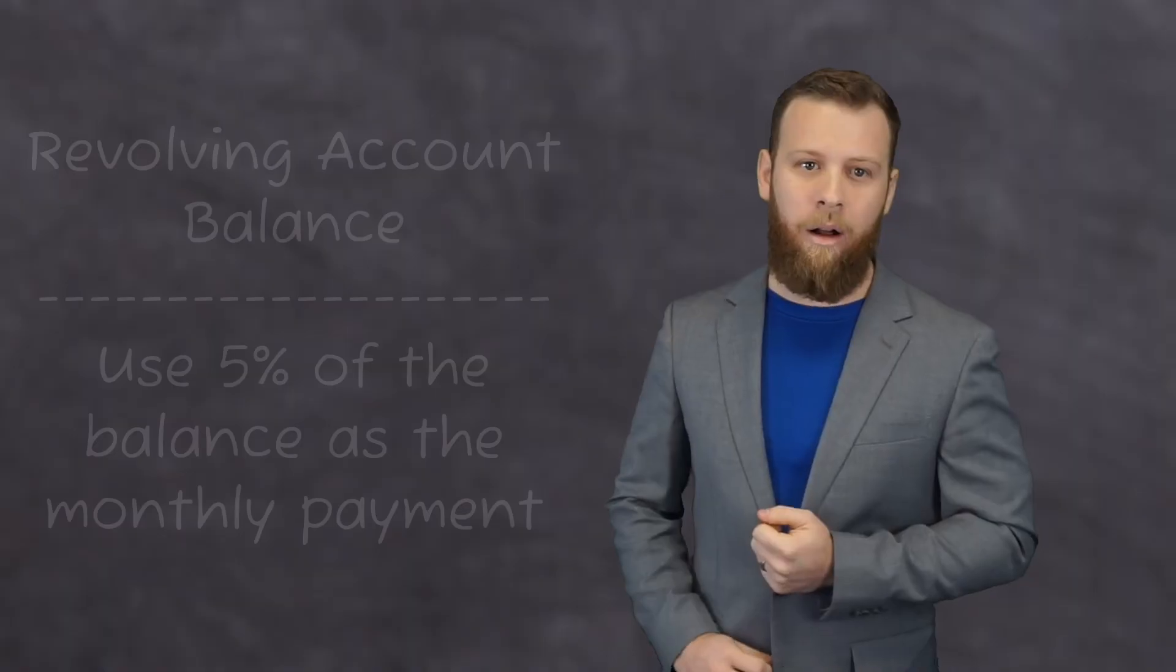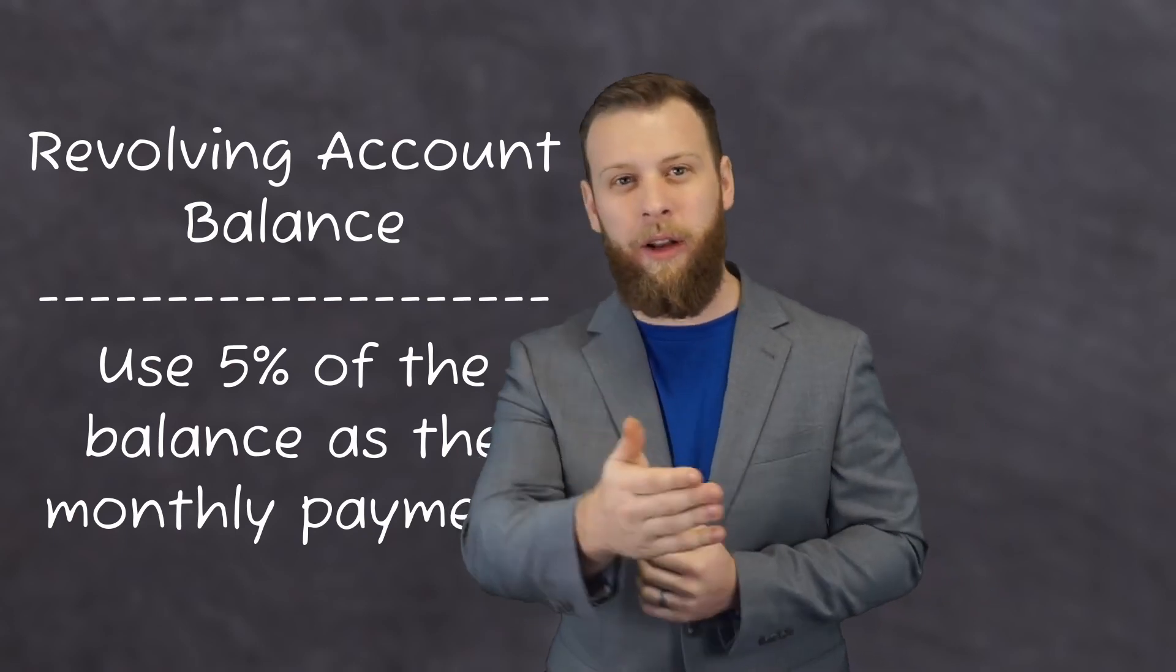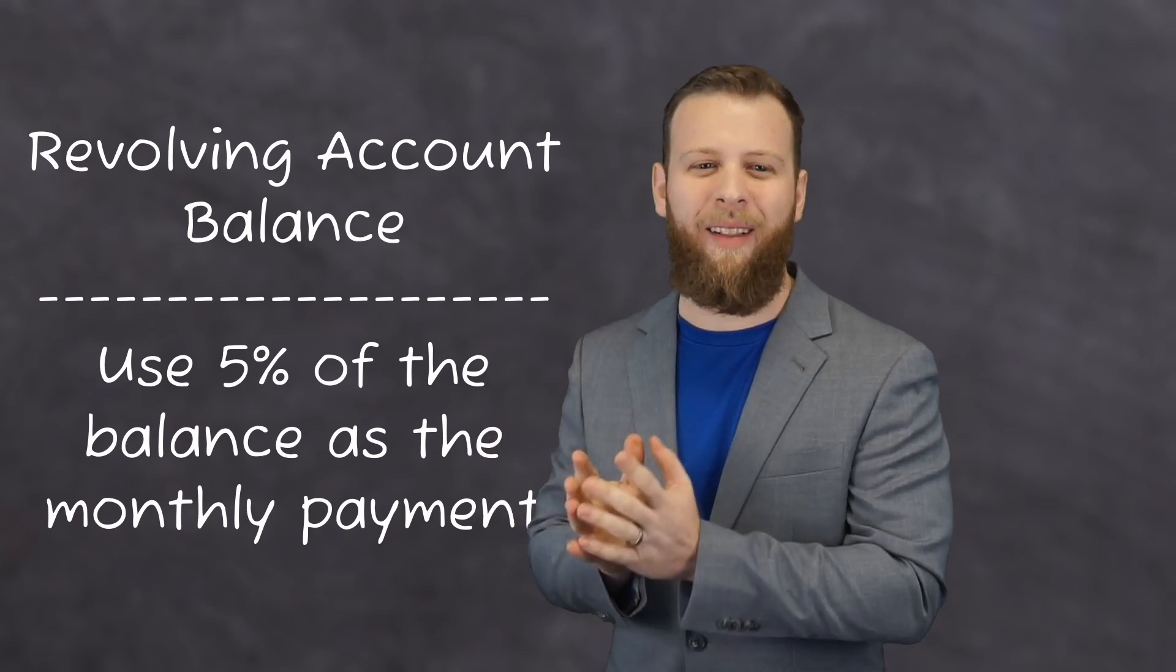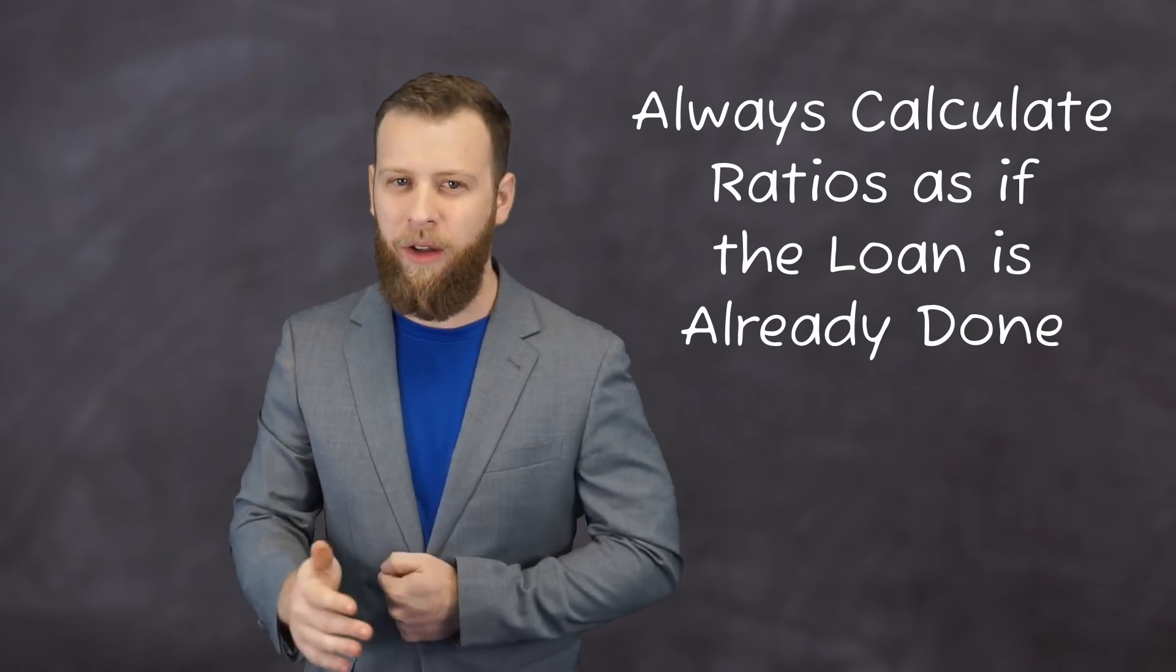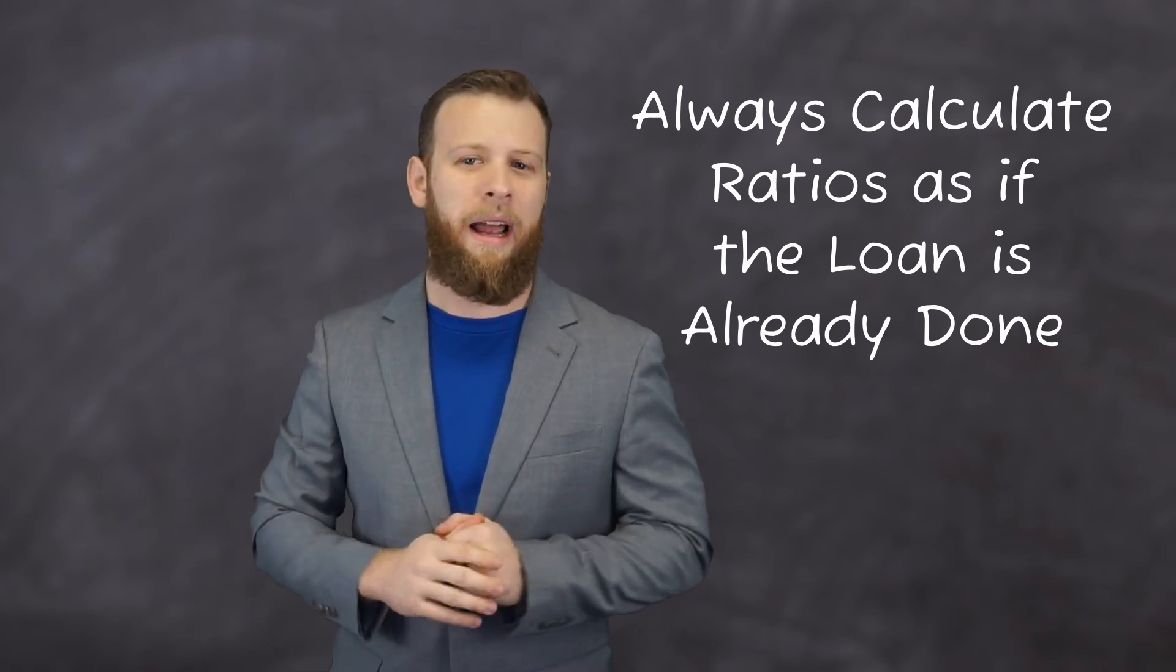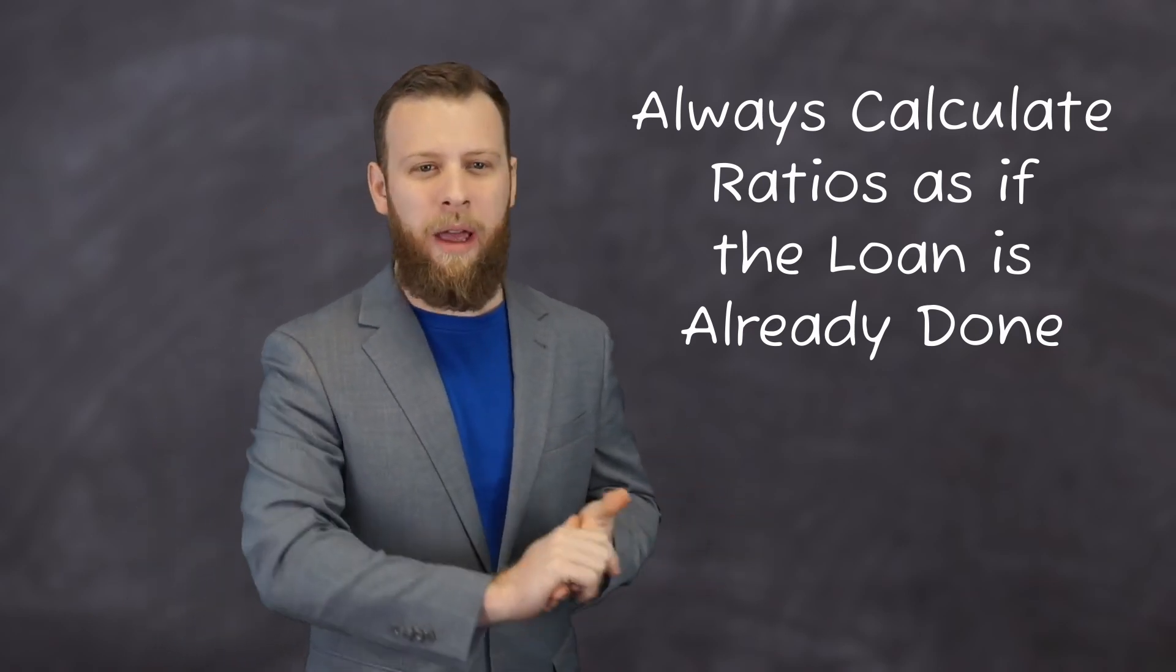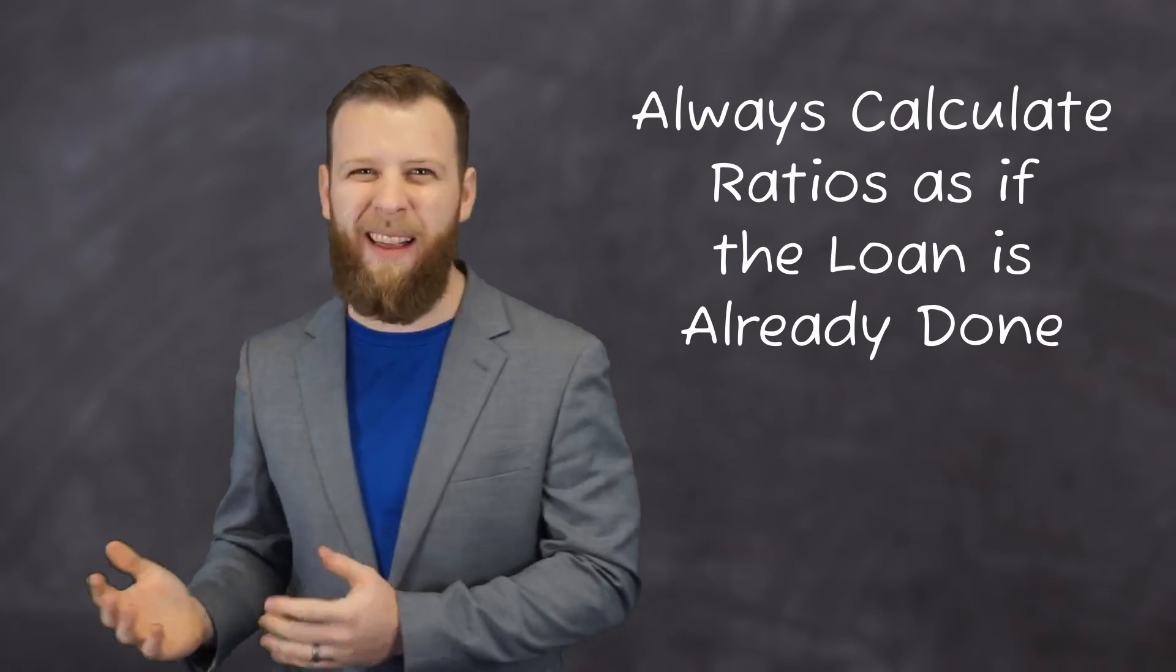Also, if you're given a revolving account balance rather than a payment on either your test or when you're pulling a credit report, we're going to use 5% of that balance as the monthly payment for that debt. We're always going to calculate these ratios as if the loan is done. If they give you a borrower's current rent payment on a question about a borrower purchasing a primary home, we're not going to add that to either of these ratios because they're no longer going to be renting once that loan closes. And finally, we need to make sure that the borrower meets both the front end and the back end ratio when we're assessing if they qualify.